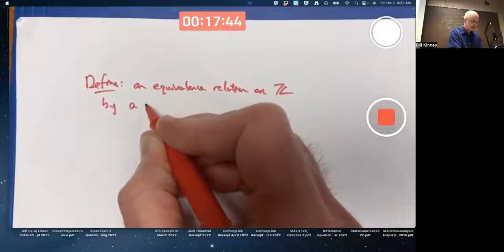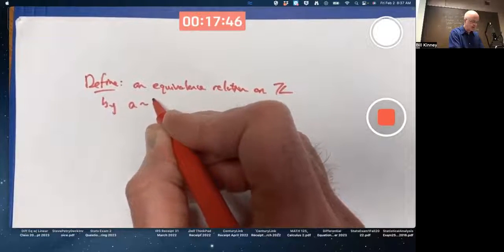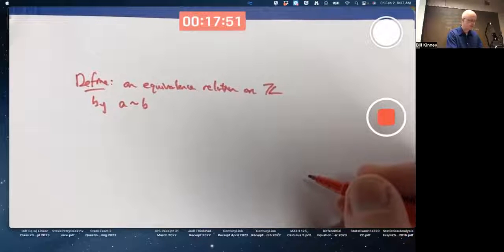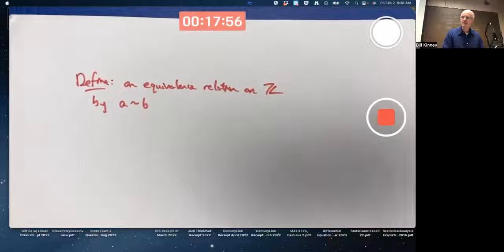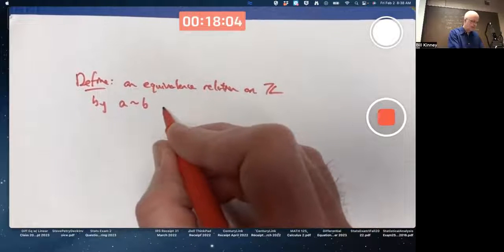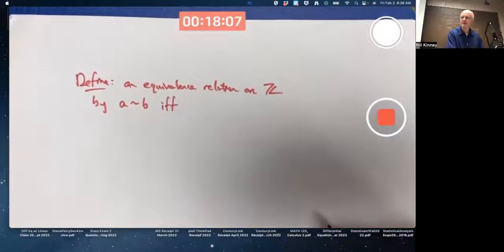By saying that A and B, any two integers are equivalent, A and B are assumed to be integers here. I use this little tilde symbol as one symbol for equivalent. There are other symbols in the book. If and only if, IFF is shorthand for if and only if.